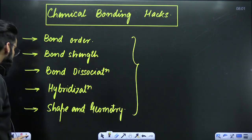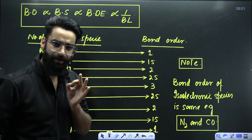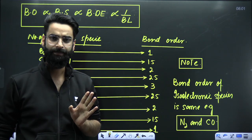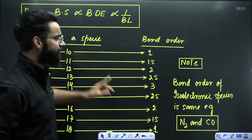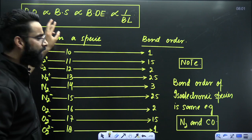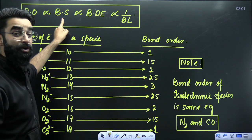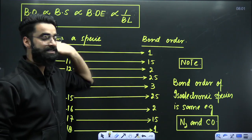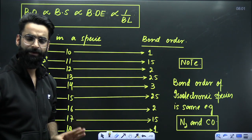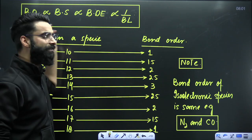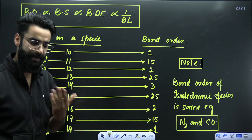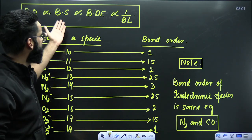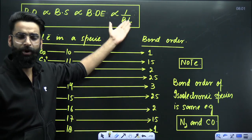Have a look — the most frequently asked question is related to bond order. There is one particular statement you need to remember: bond order is directly proportional to bond strength, which is directly proportional to bond dissociation energy, which is inversely proportional to bond length. This is the trend from which anything can be asked — you'll be given three or four species and you'll have to compare their bond orders, bond strengths, bond dissociation energies, and bond lengths.